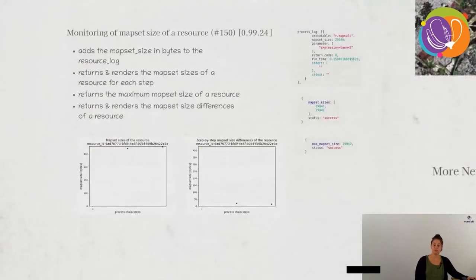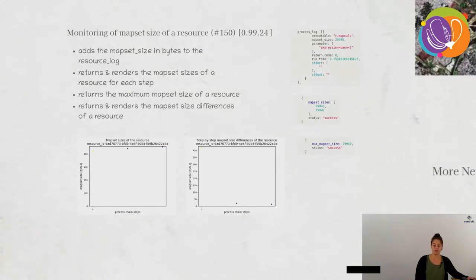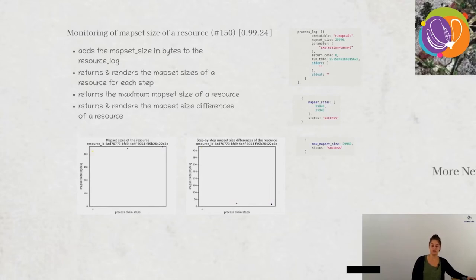Another useful feature is monitoring of mapset sizes. Different endpoints are now available and during calculation you can see the size in bytes of the mapset, which can become quite large during processing. Endpoints are also available to render these sizes, run diffs, and get the maximum size as a result — very useful for estimating the storage that needs to be mounted for Actinia to run successfully.